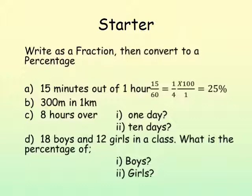As always I have a starter, and here you need to write these pieces of information as a fraction and then convert them into a percentage. So if you look at the first one, you need to look at the two units and see how they are written as a fraction. So 15 minutes as a fraction of an hour is 15 over 60, we simplify that to a quarter, and we multiply by 100 to get 25%. I'll leave this up for 5 seconds so you have a chance to write things down or do the questions.